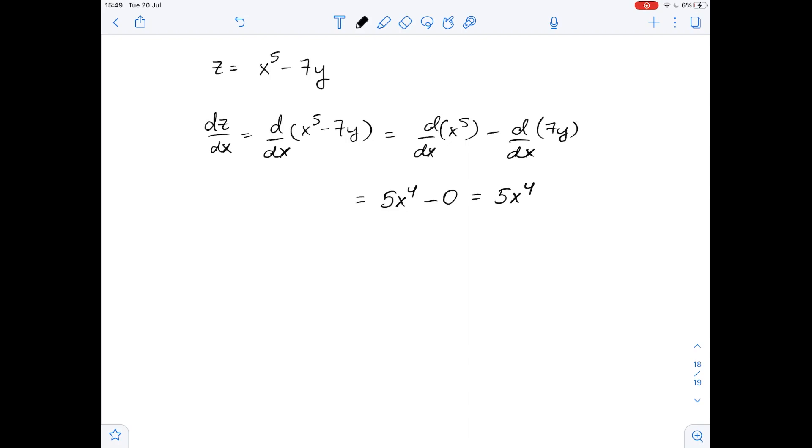Now let's find the derivative of z with respect to y. It equals the derivative of x^5 - 7y with respect to y, which equals the derivative of x^5 with respect to y minus the derivative of 7y with respect to y.